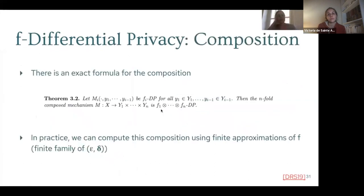In f-differential privacy there is an exact formula for composition, but in practice we do not use it. We prefer to work with reduced mechanisms — reducing each mechanism to a finite family of epsilon-delta pairs — and then use an approximation for the composition.